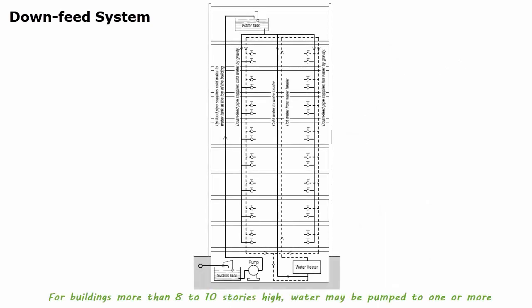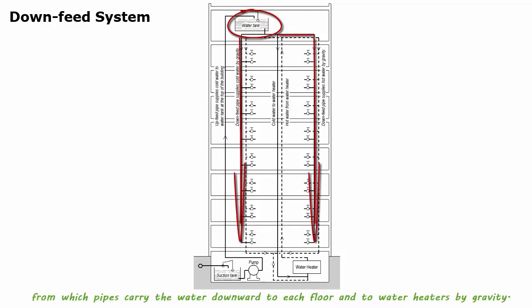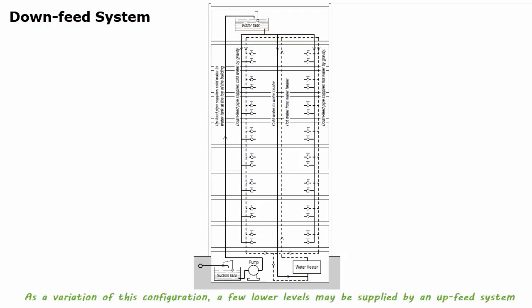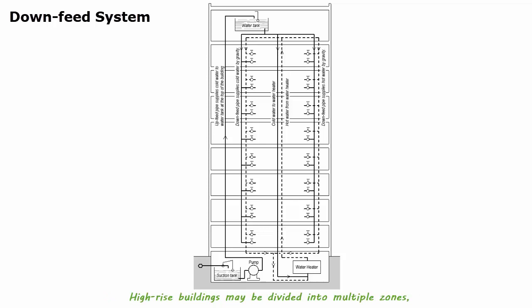For buildings more than 8 to 10 stories high, water may be pumped to one or more elevated storage tanks at the top of the building, from which pipes carry the water downward to each floor and to water heaters by gravity. As a variation, a few lower levels may be supplied by an upfeed system under pressure from a public main, while the remaining upper floors are served by a downfeed system. High-rise buildings may be divided into multiple zones, each served by a separate downfeed system.